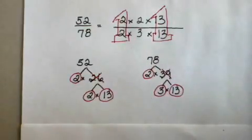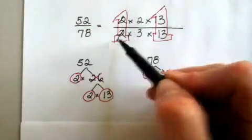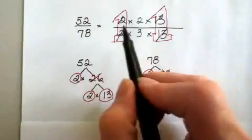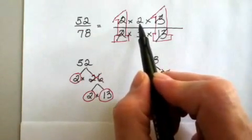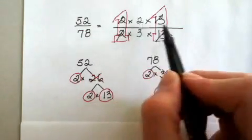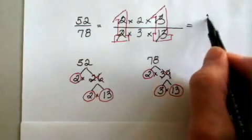That allows us to cancel the 2 over the 2, and the 13 over the 13. 1 times 2 is 2, 2 times 1 is 2,